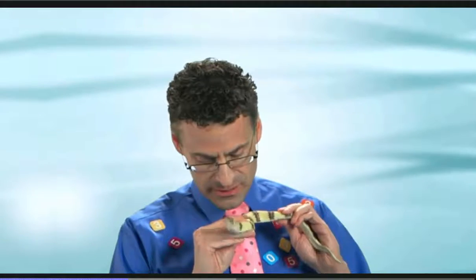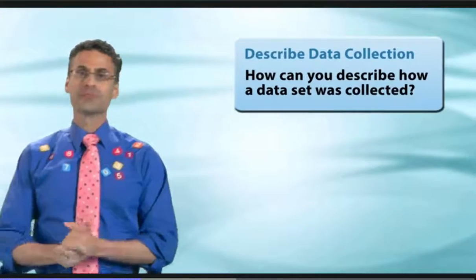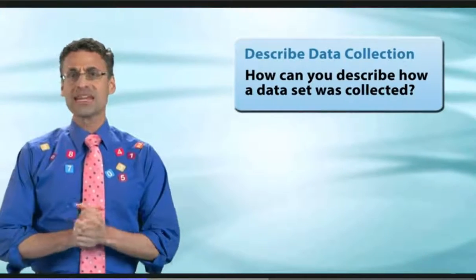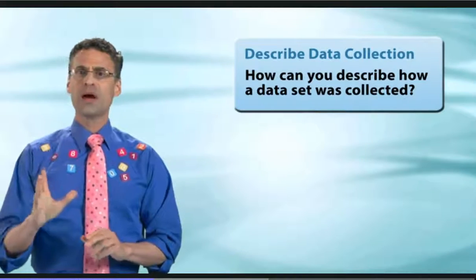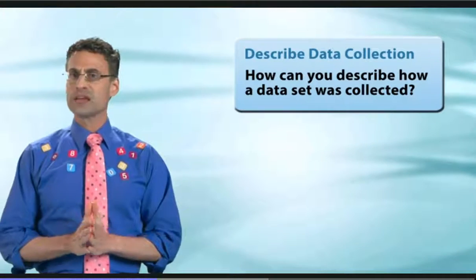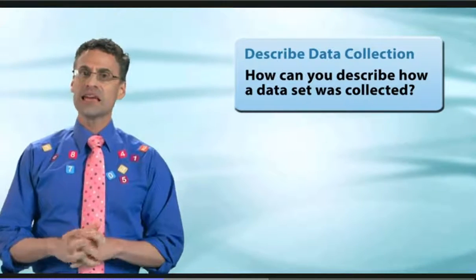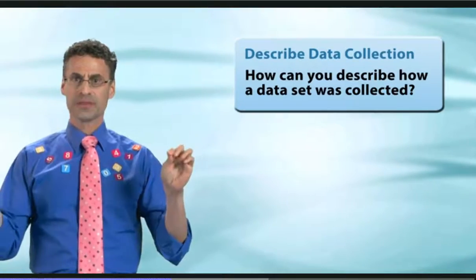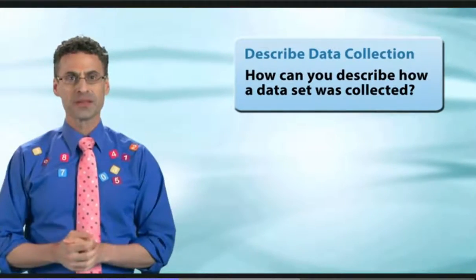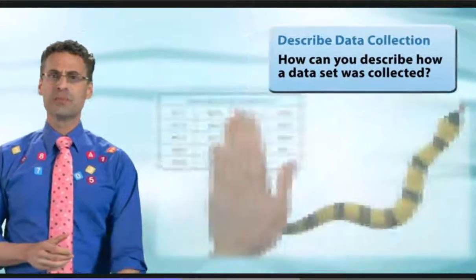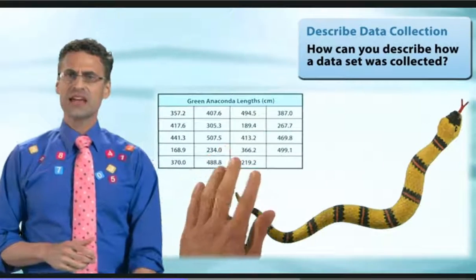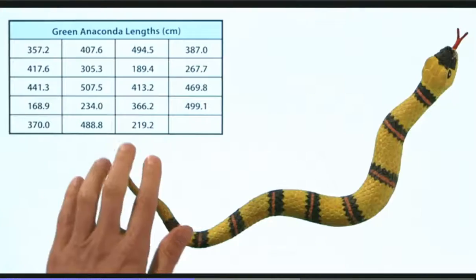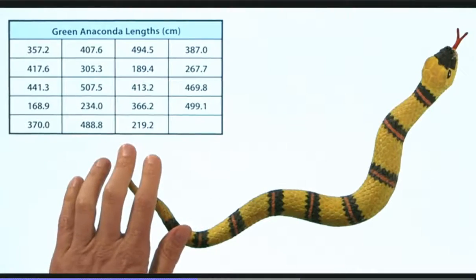Let's check it out for ourselves. A biologist is studying green anacondas. One way of measuring a green anaconda is by laying a string along its length and then measuring the length of the string. This table of data gives data collected by the biologist using this method.